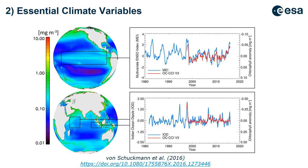Why are phytoplankton a good essential climatic variable? Firstly, phytoplankton are at the core of the carbon cycle in the ocean. They're at the base of the food web, they photosynthesize, they modulate CO2 concentrations in the ocean, which influences atmospheric CO2 concentrations. Ultimately, they play a pivotal role in modulating our climate.